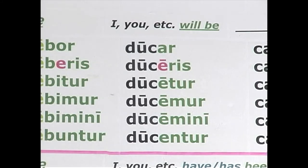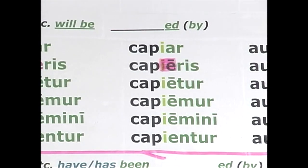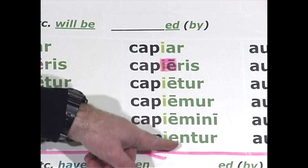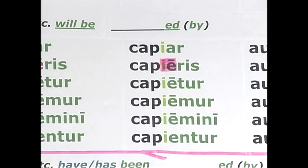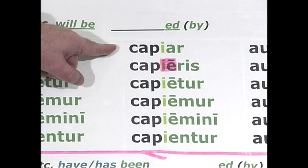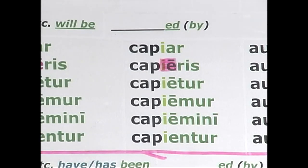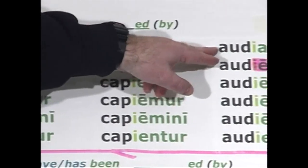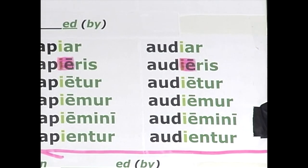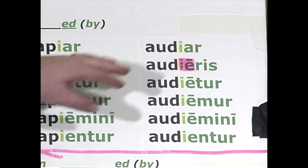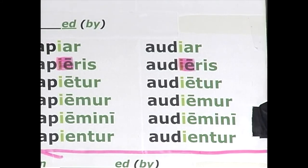Third conjugation io is similar: capiar, capieris, capietur, capiemur, capiemini, capientur. Notice the -a- and -e- vowels present in the future, then the passive personal endings. Translation: I will be captured, you will be captured, he will be captured, we, you plural, they will be captured. And for the fourth conjugation: audiar, audieris, audietur, audiemur, audiemini, audientur. Translation: I will be heard, you will be heard, he will be heard, we will be heard, you plural will be heard, they will be heard.